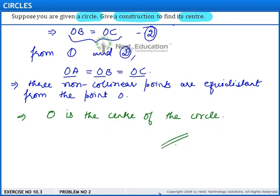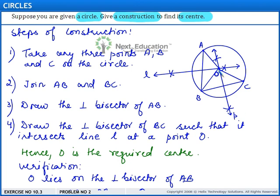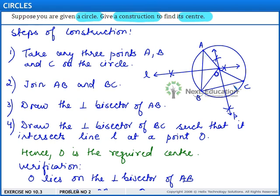So this completes the verification part. Thus, to find the center of a circle, we take any three non-collinear points on the circle such that on drawing the perpendicular bisectors of the line segments joining A, B and B, C, the point of intersection gives the center of the circle. This completes the construction.